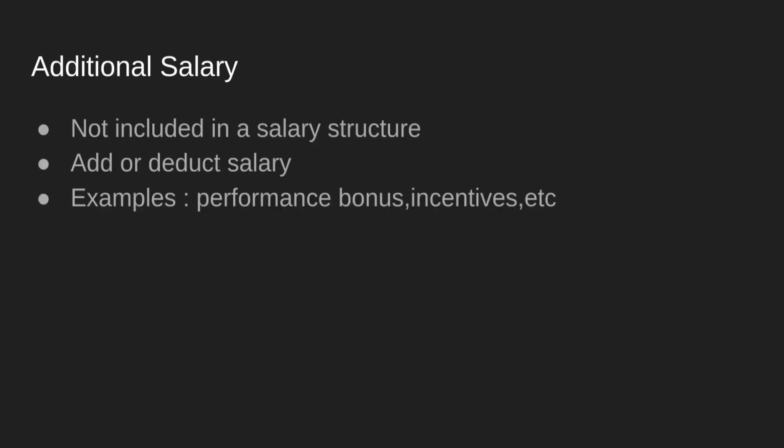Additional salary is something which is not included directly in the salary structure. It is created separately and depending upon the payroll date it is added in the salary slip of an employee. Using additional salary you can add or deduct salary based on the salary component, which is of two types: earning and deduction.